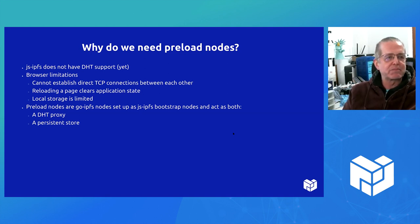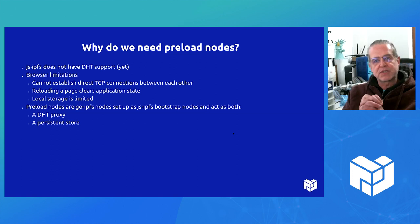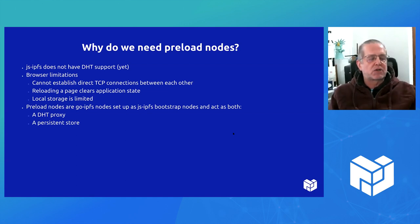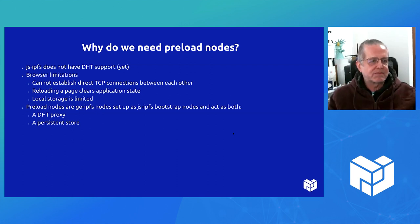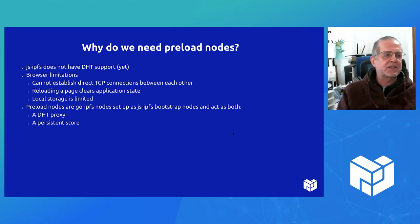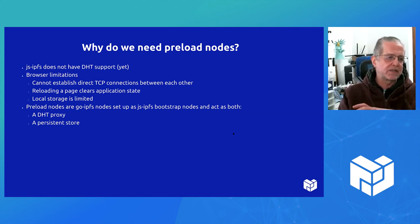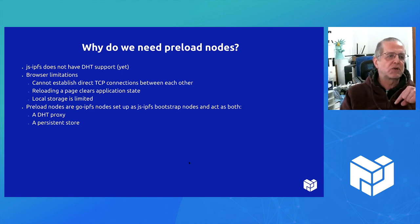If you reload the page, you lose all of your application state. You have a very limited amount of local storage. So what we have is nodes that on the one hand act as a DHT proxy. If you're in JSIPFS and want to load something from the IPFS network, you cannot connect to the DHT because you cannot do TCP connections. So it acts as a proxy for JSIPFS, and it also serves as a place to persist the storage of the JSIPFS node so that if you reload the page, your content is still there.